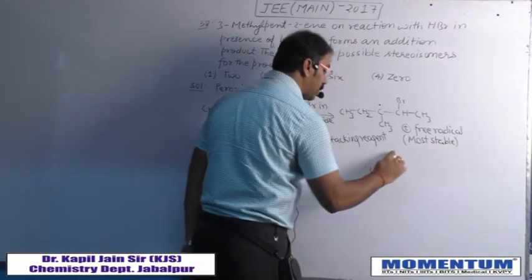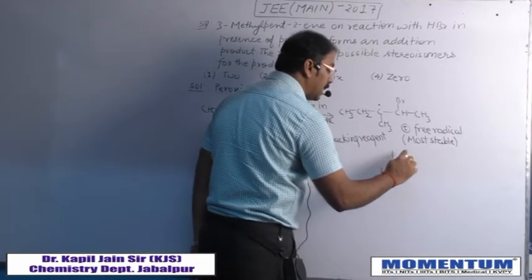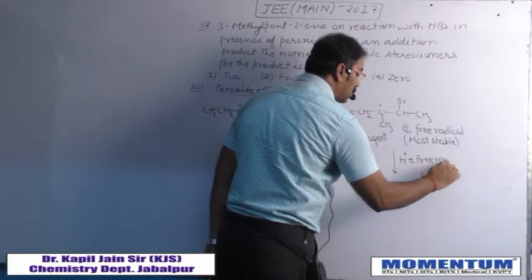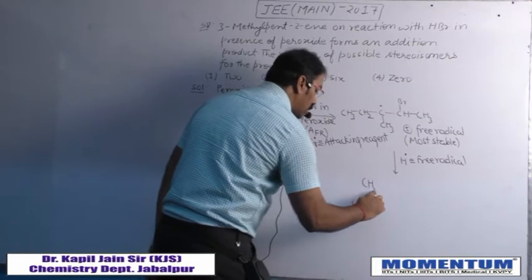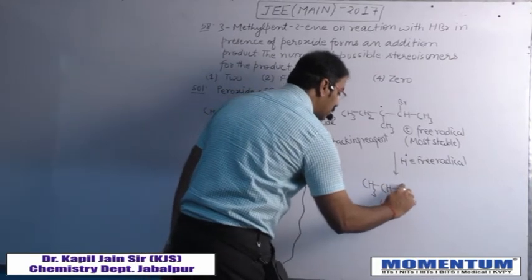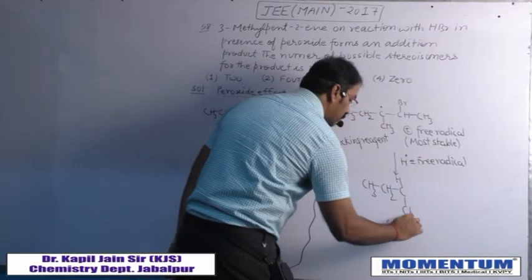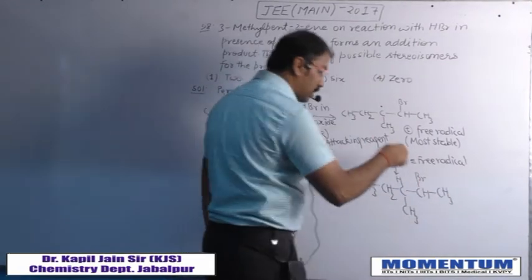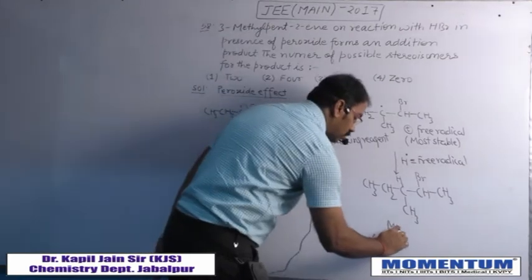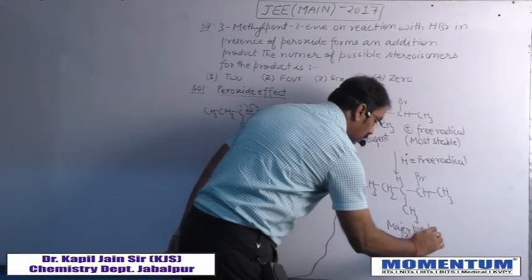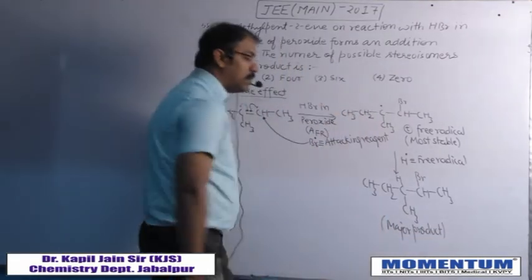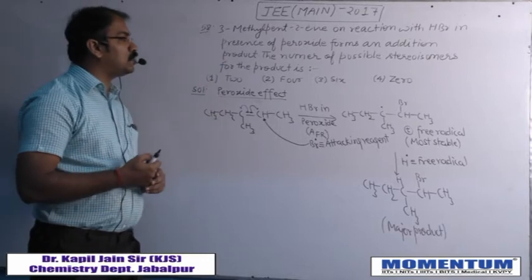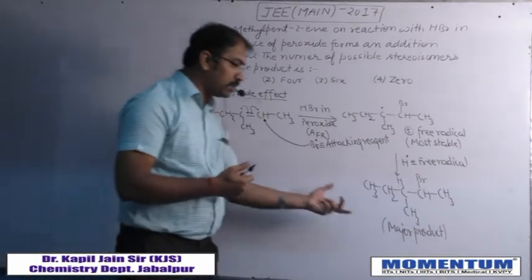In the next step, in the peroxide effect, the H free radical attacks on this tertiary free radical. So the major product will be formed. But this is the major product — the question asks for the number of possible stereoisomers for this product.